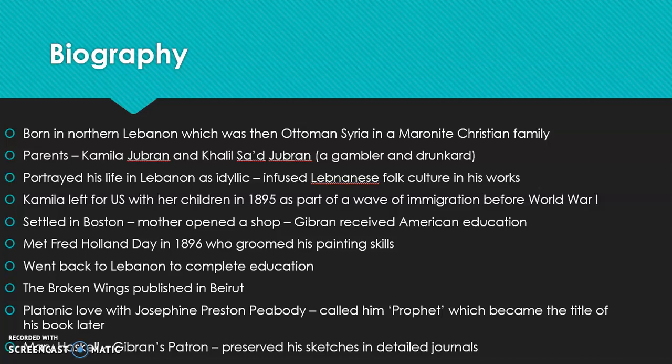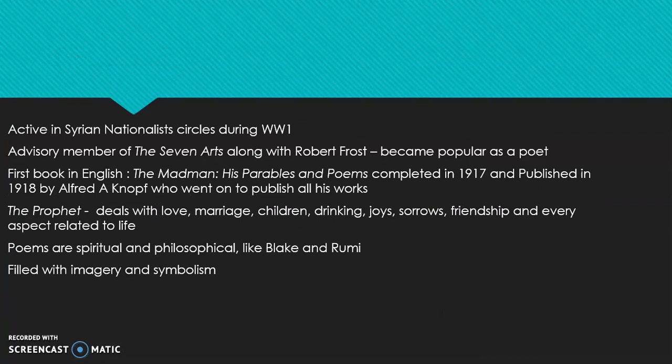Another important episode in Khalil Gibran's life was his platonic love for Josephine Preston Peabody, who used to call him 'The Prophet.' This title later became the name of his famous book. There was also Mary Haskell, Gibran's patron and a major influence on him. They exchanged letters, and she preserved his sketches in detailed journals. Their letters and journals are regarded as documents of Gibran's literary legacy.